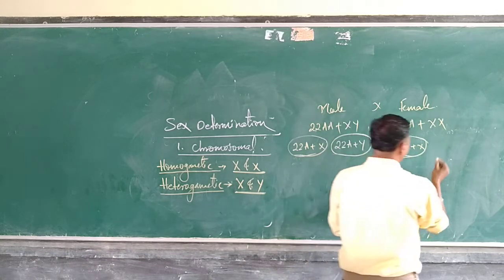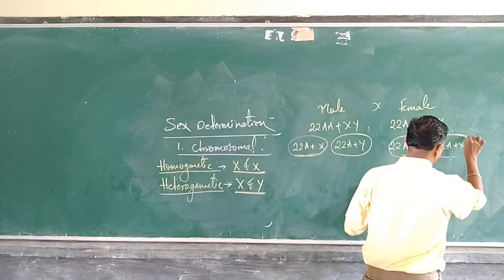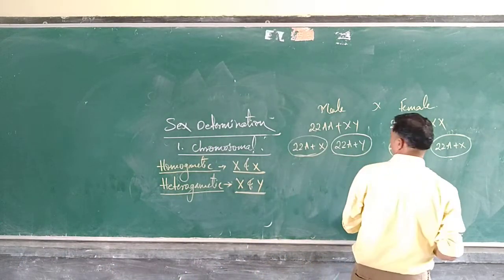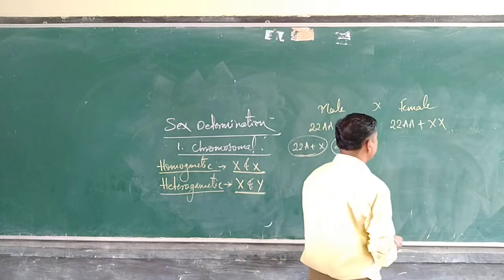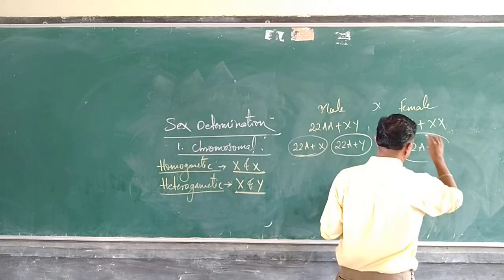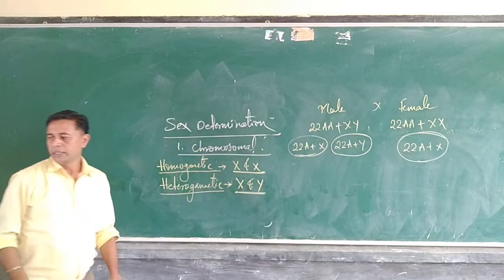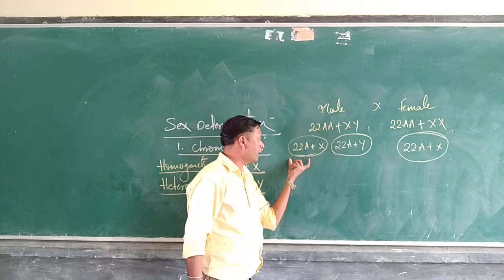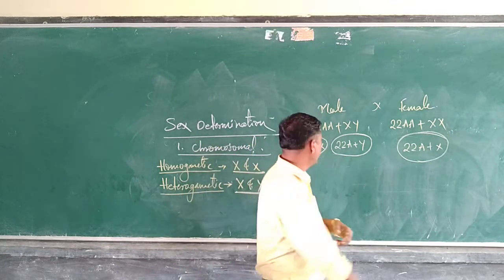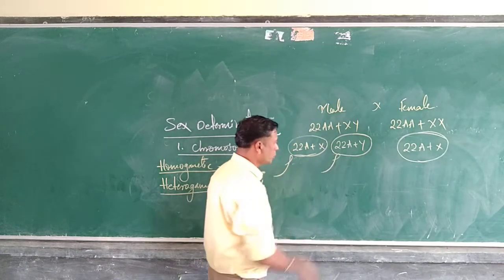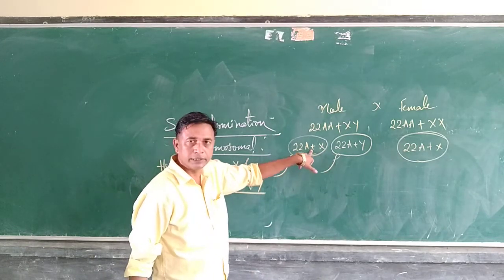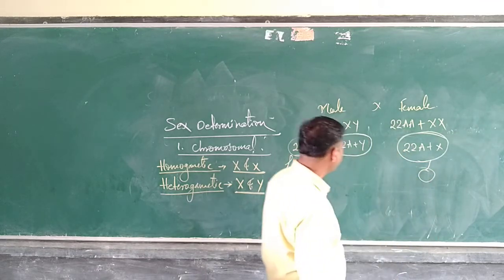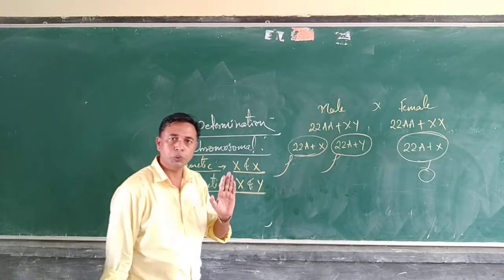Since both female gametes are the same, we write only one. So the female gamete is 22A plus X. In the male, there are two types of sperms: one sperm having 22A plus X and another type having 22A plus Y. Whereas in the case of the egg, there is only one type, that is 22A plus X.